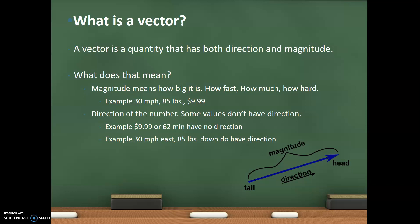On the other hand, 30 miles an hour to the east, or 85 pounds down, have direction. So 35 miles an hour to the east is opposite of 30 miles an hour to the west. 85 pounds down is different than 85 pounds horizontal. They're just different directions.